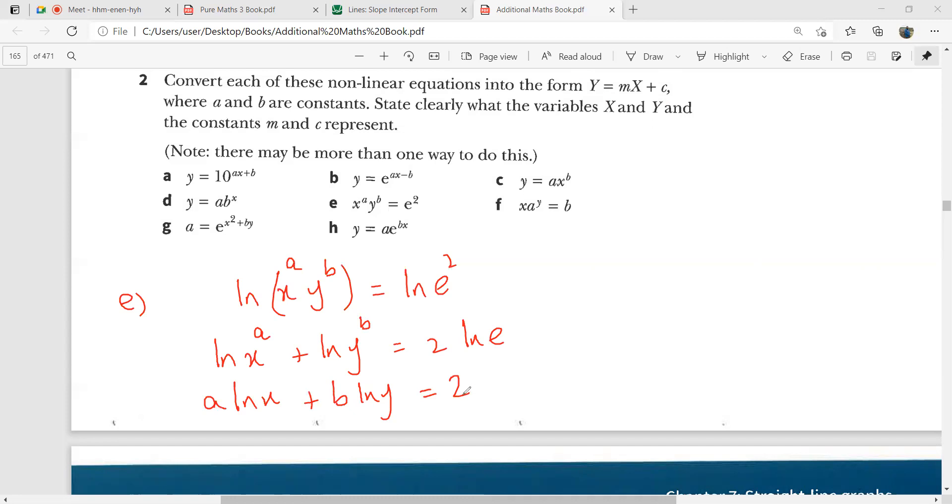This becomes a ln x plus b ln y and that is equal to 2. Now we have got a problem here. We need to have something in the form y equals mx plus c. You see, we have ln x here, we have ln y here. We have just this one number here.